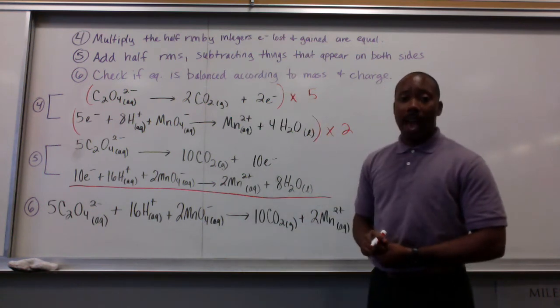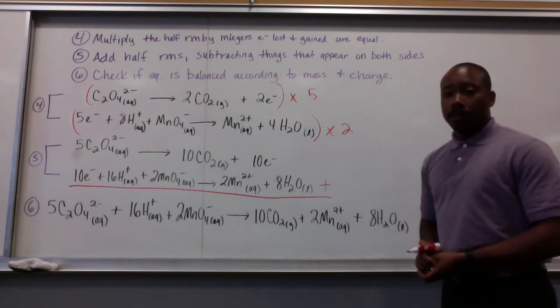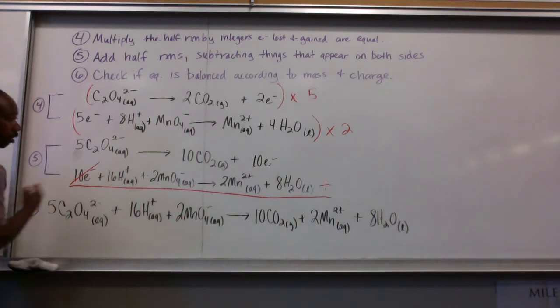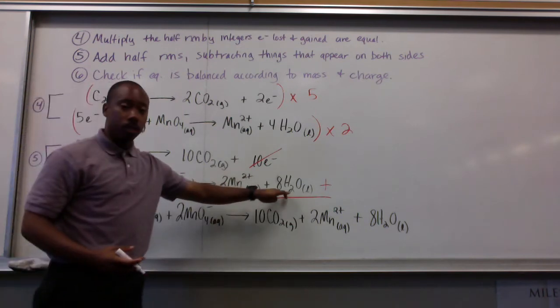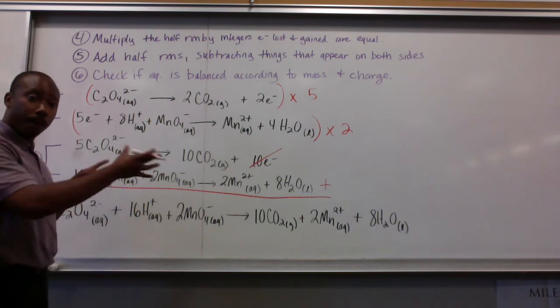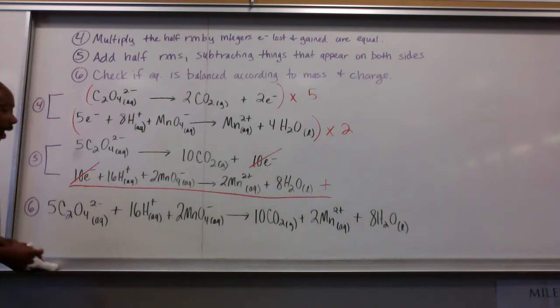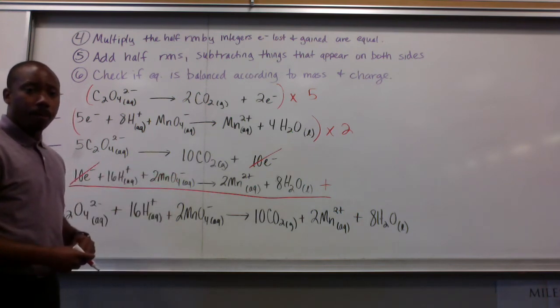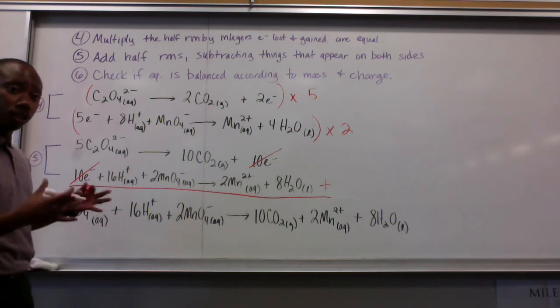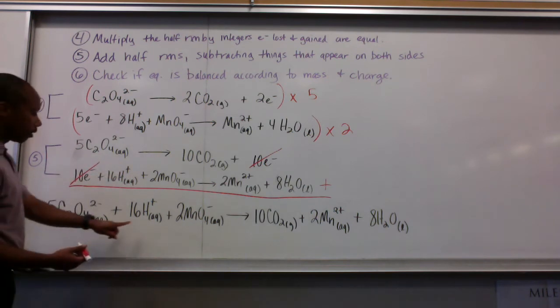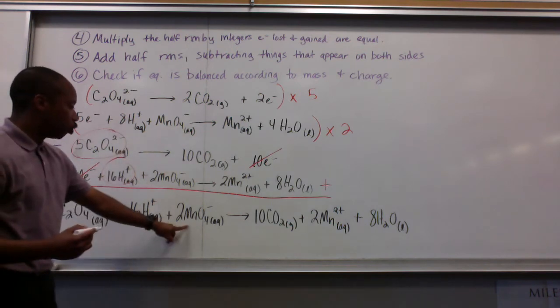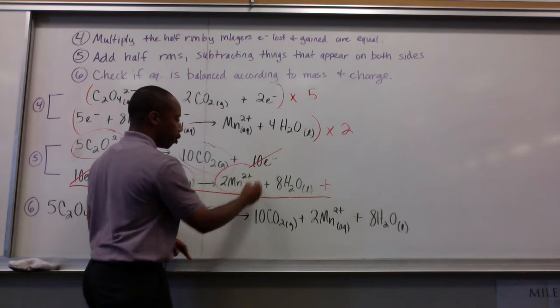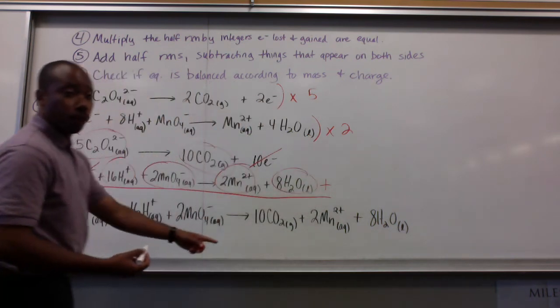We add our half reactions together. And what this does, if we add these two together, things that appear on our product side and our reactant side, they cancel. In this case, it's only my electrons. Sometimes you'll have water molecules on the right side and on your reactant side. Then they will cancel too, depending on how many you have. But in this case, only your electrons cancel. So now I add up all my substances on my reactant side, add up all the things on my product side. All of my reactants add up, and I get 5 oxalates plus 16 H+ plus 2 permanganates. And those are all of my reactants left over. And then that produces 10 carbon dioxides plus 2 manganese 2+ atoms plus my 8 water molecules. And this is your final answer, gentlemen.